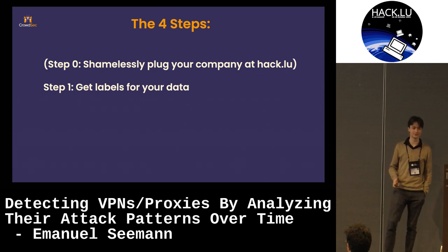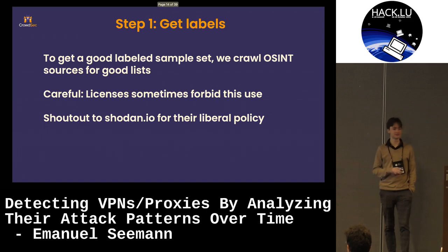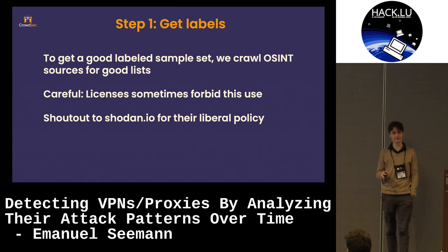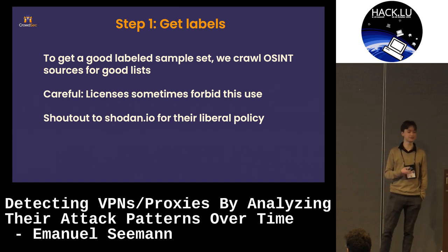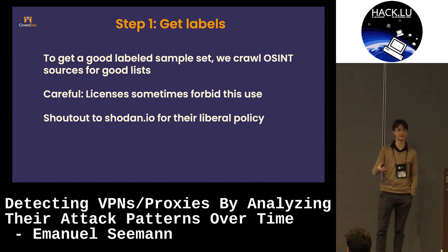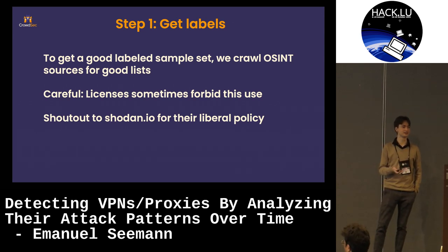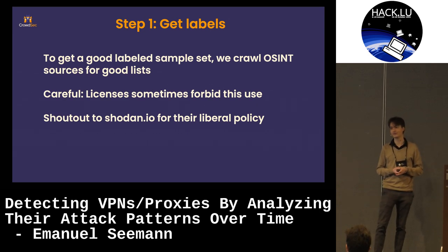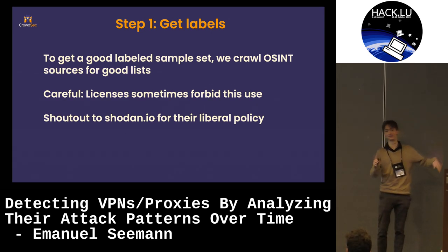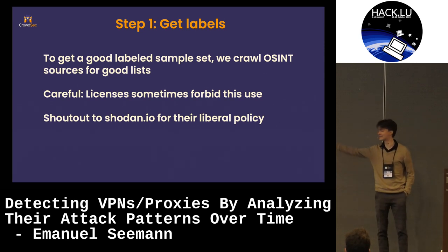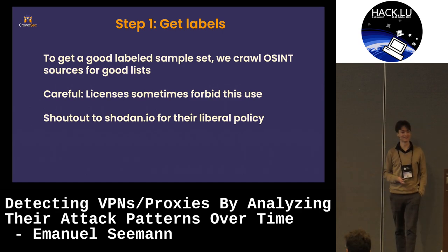Step one is to get labels for our data. For this we sourced a lot of OSINT sources. There are good providers with permissive licenses that allow us to build this product. An example of a less permissive provider is Spyse — they don't allow building products with their data. On the other hand, Shodan is super permissive: they say you can do this, just mention them. We're mentioning them here — they're very cool, go look at their product.